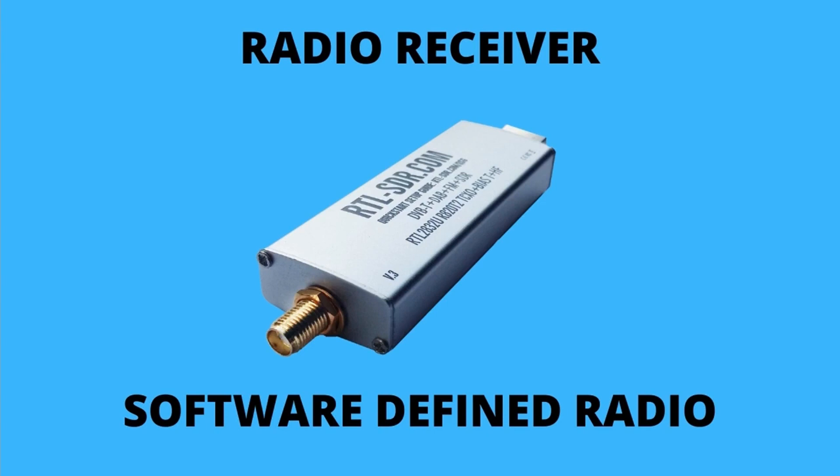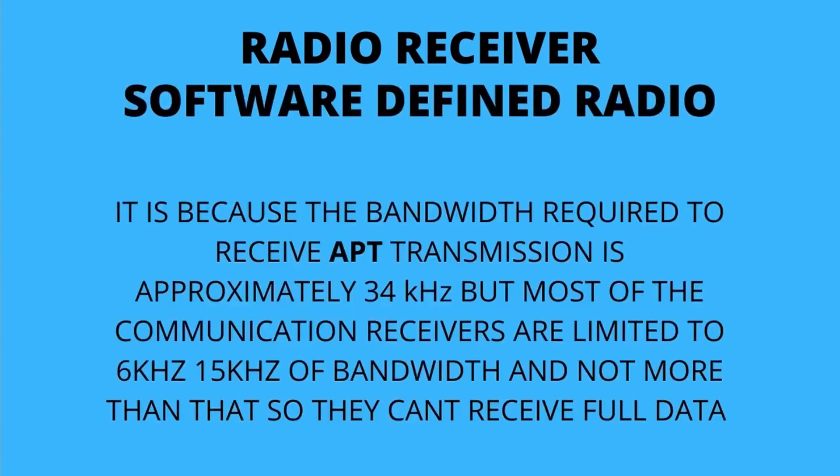Our radio receiver is chosen to be an SDR, i.e. Software Defined Radio. This is because the bandwidth required to receive APT transmission is approximately 34 kilohertz, but most communication receivers are limited to 6 or 15 kilohertz of bandwidth, and so they cannot receive the full data.